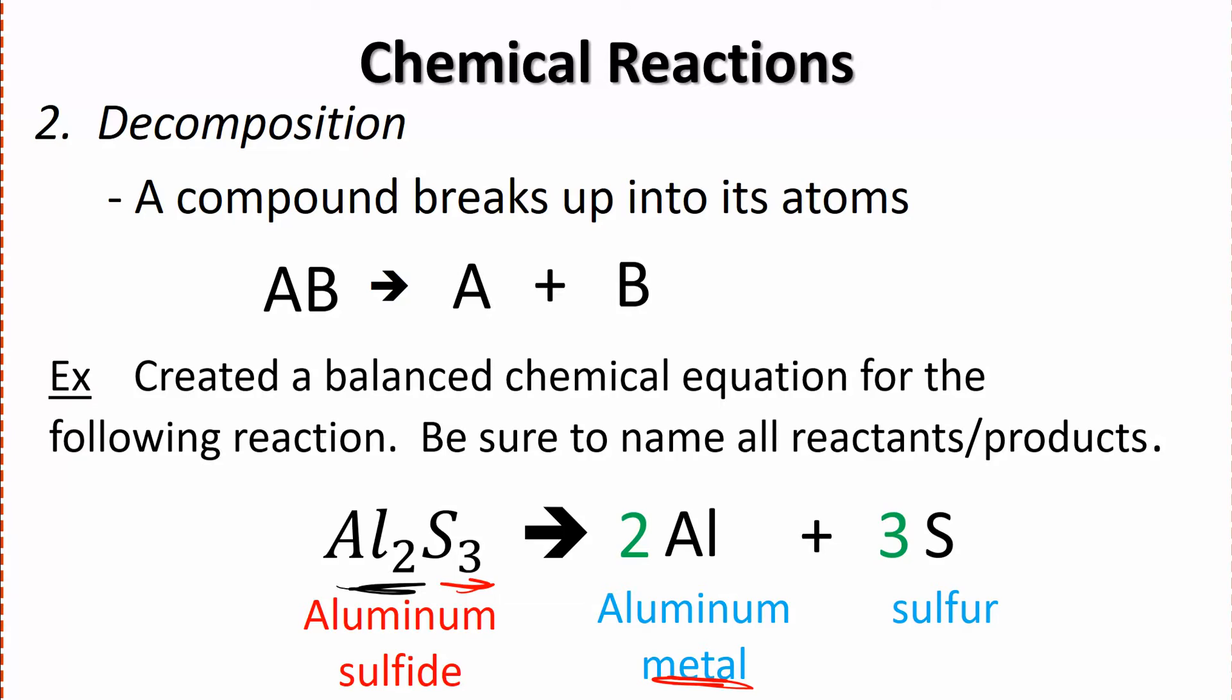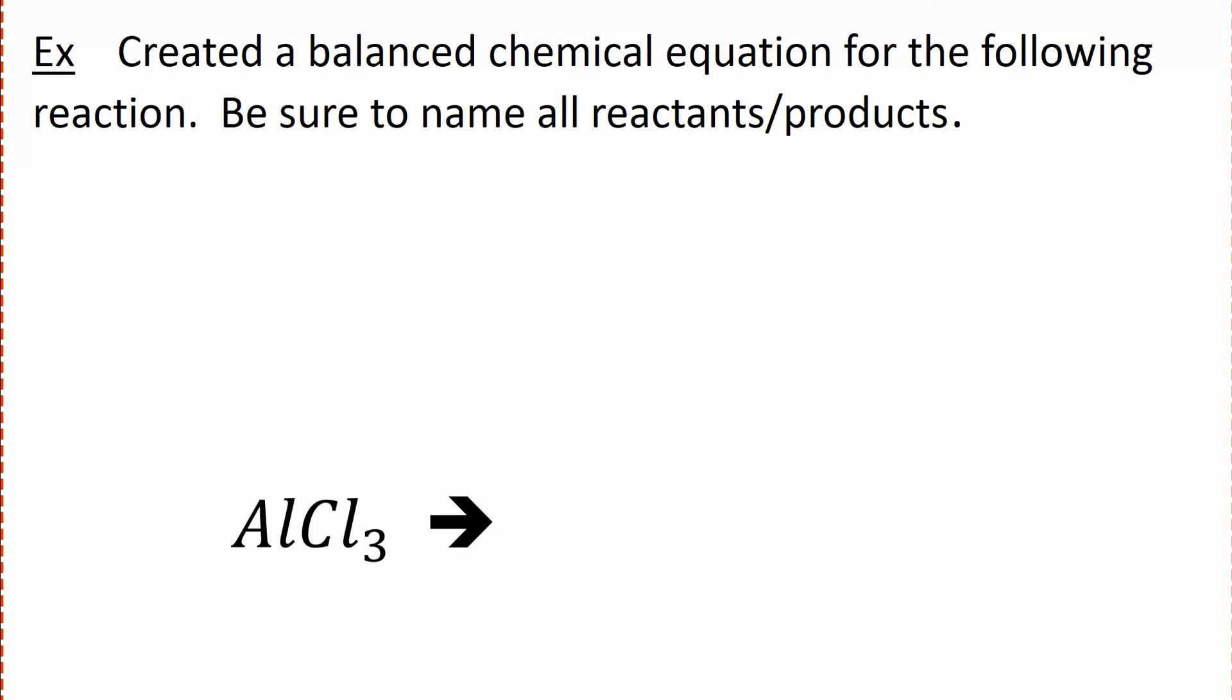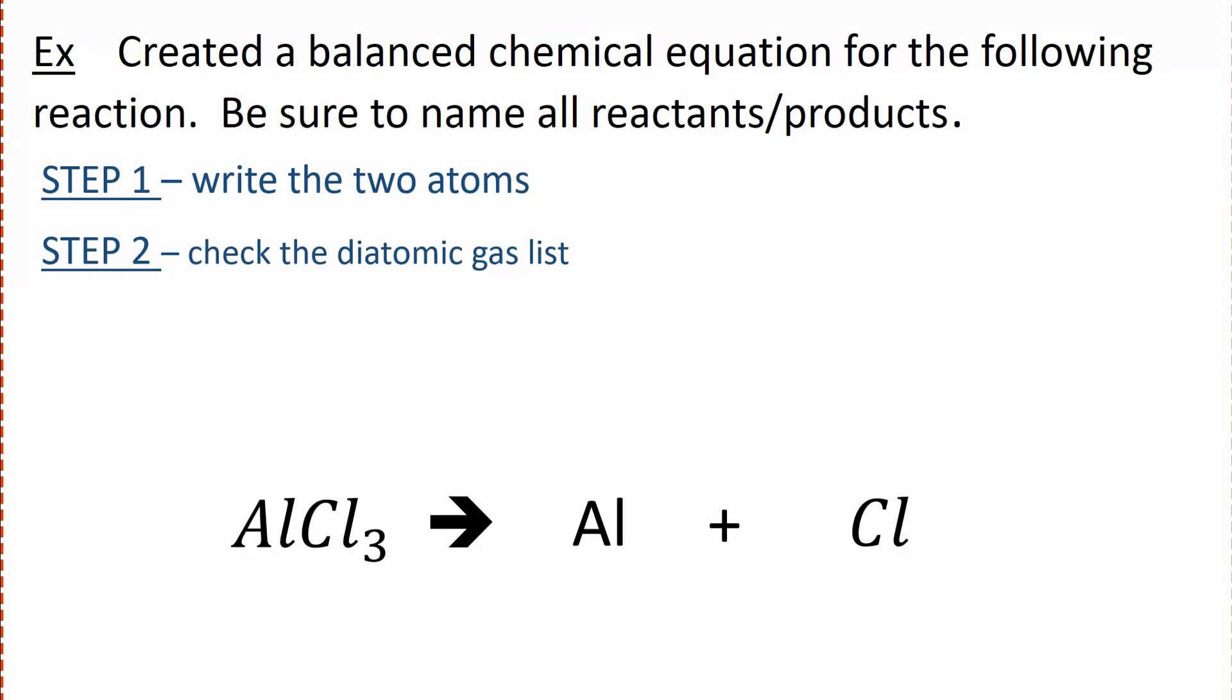Let's take a look at another example. We're going to create a balanced equation and name everything. This time we're starting with aluminum chloride. Step one says we write the two atoms of the compound: aluminum and chlorine. Our next step is we need to check or consult the diatomic gas list. Are either of the elements on the diatomic gas list? Chlorine is on the diatomic gas list, Cl₂. So we make that into a 2. Aluminum is not on the list, so we won't make that into Al₂.